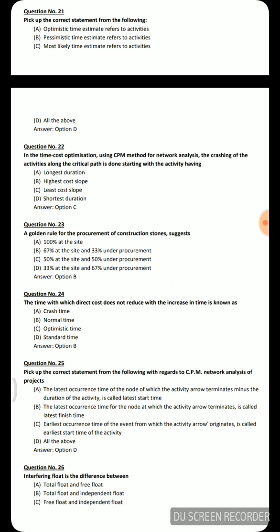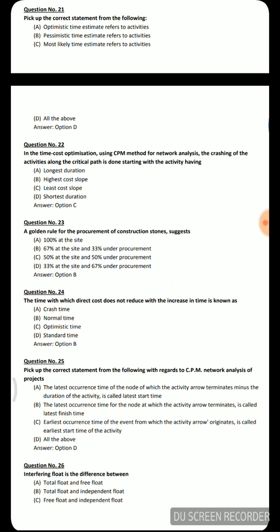Question 22: In the time-cost optimization using CPM method for network analysis, the crashing of activities along the critical path is done starting with the activity having — Option A: longest duration, Option B: highest cost slope, Option C: least cost slope, Option D: shortest duration. For optimization we start with the least cost slope, so option C is the correct answer.